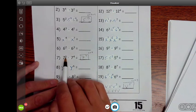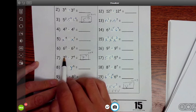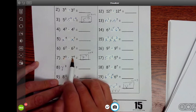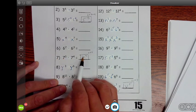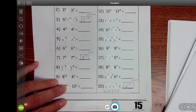Now, 7 to the 0, anything to the 0, remember, is 1. So all this is just 1. What's 1 times 7 to the 4th? It's going to be 7 to the 4th. Anything times 1 is itself.